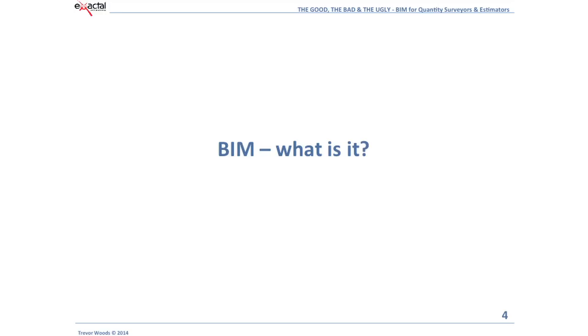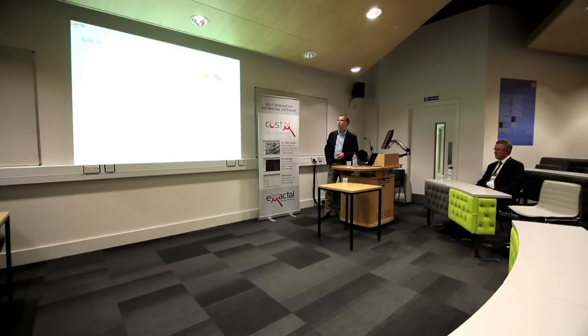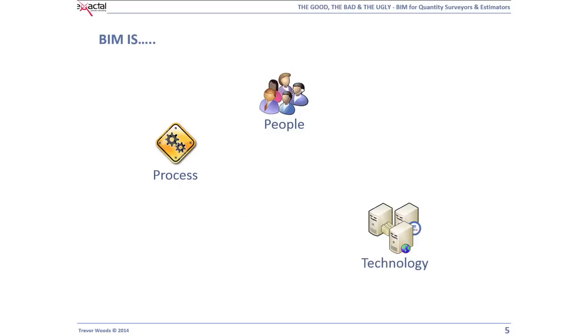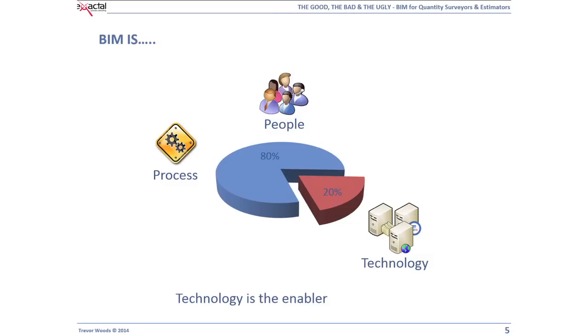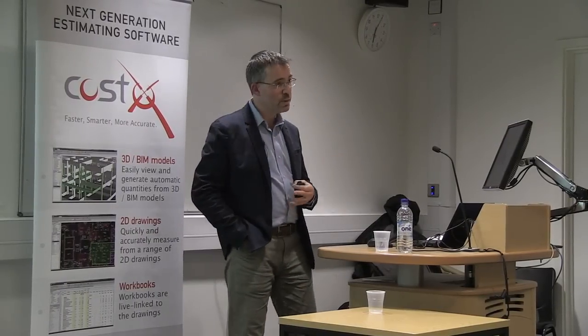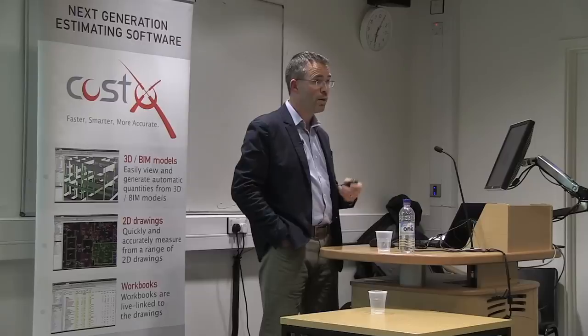BIM — what is it? To me, BIM is a process. It's not a software package. It's not Revit, ArchiCAD, Costex, Vectorworks, Navisworks. BIM is people, process and technology — a combination of all three. The smallest part is technology, which is really only 20% of it. Most successfully implemented IT projects succeed because of people and process, with technology as the small component. Technology is really the enabler.